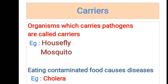Organisms which carry pathogens are called carriers. Examples of carriers are the house fly and the mosquito. Eating contaminated food causes diseases such as cholera. House flies and mosquitoes are the main carriers that transmit pathogens.